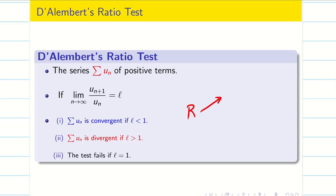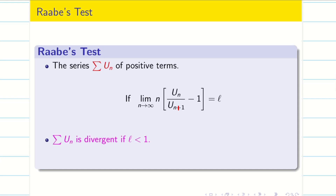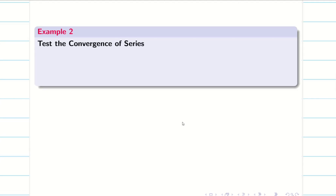In this situation, we go for either Raabe's test or limit comparison test, as these two are in our syllabus. For Raabe's test, the same summation u_n is a positive term series: it is divergent if l is less than 1, and convergent if l is greater than 1. Now let us go to the problem.